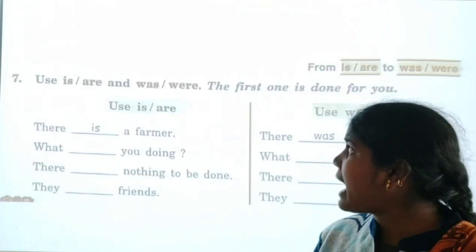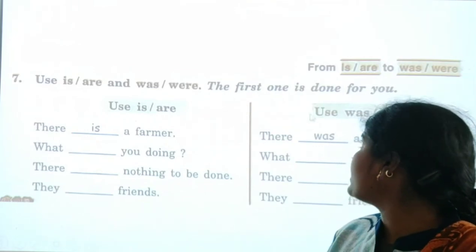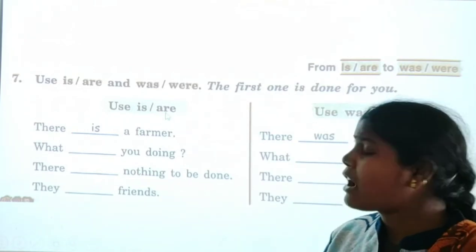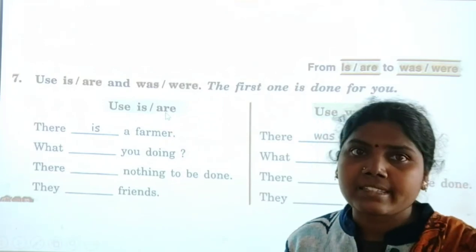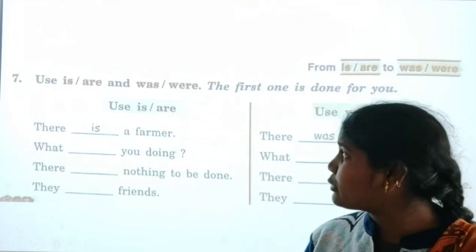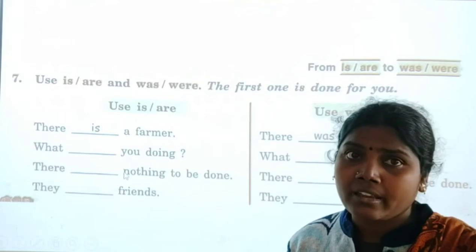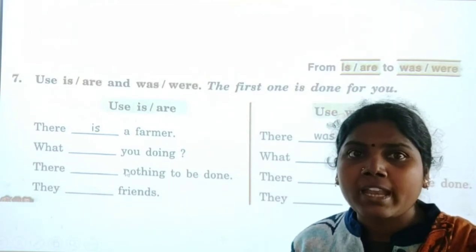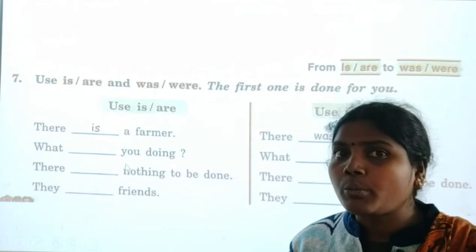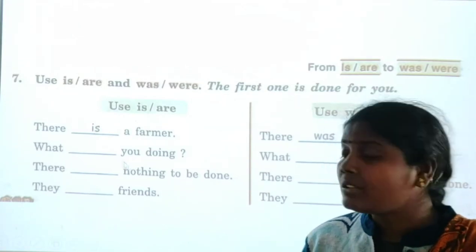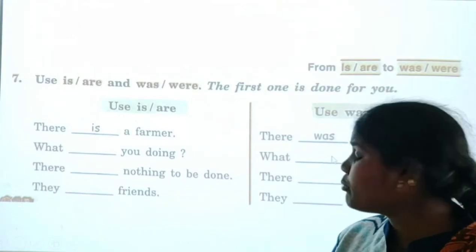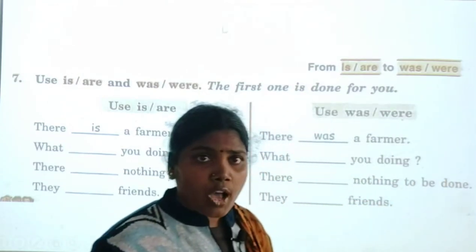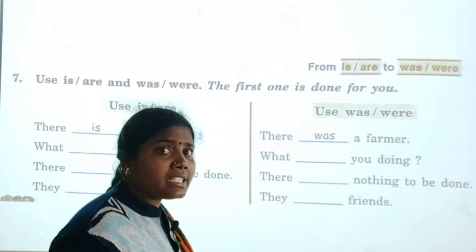Now use 'is,' 'are,' 'was,' and 'were.' The first one is done for you. 'Is' and 'are' are present tense. For singular pronouns we use 'is,' and for plural pronouns we use 'are.' Likewise in past tense, for singular we write 'was' and for plural we write 'were.'